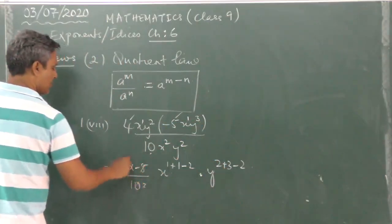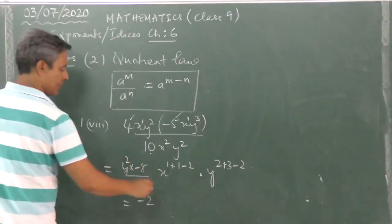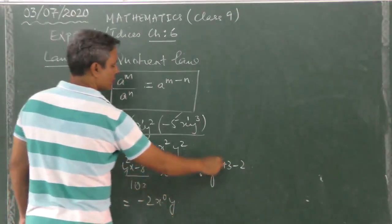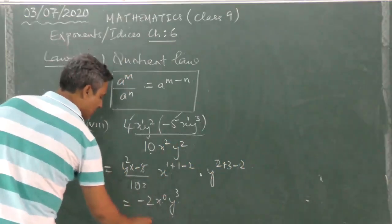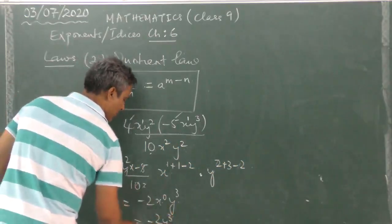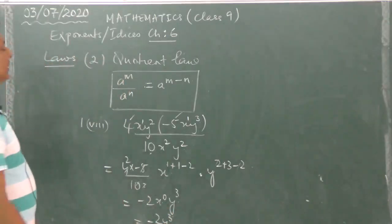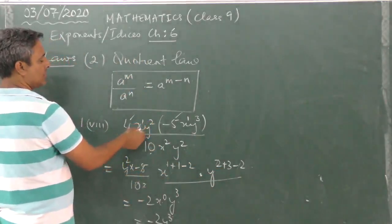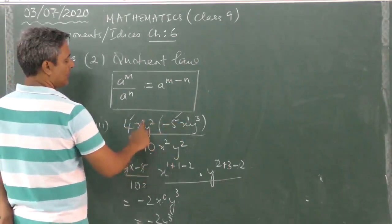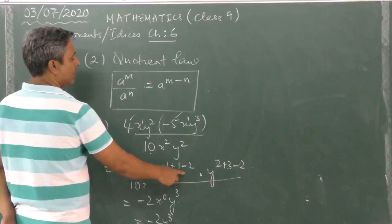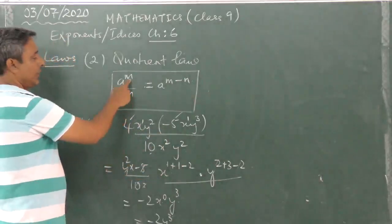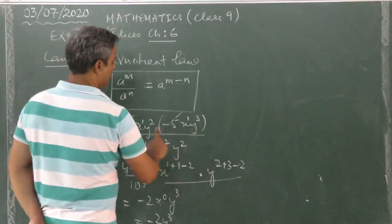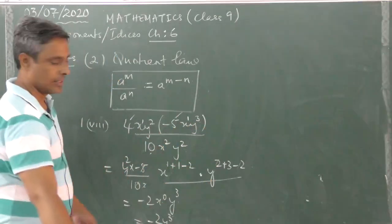Completing the calculation: 4 into minus 5 by 10 gives minus 2. For x: 1 plus 1 is 2, then 2 minus 2 gives x to the power of 0. For y: 2 plus 3 minus 2 gives y to the power of 3. The answer is minus 2y cubed. We add the powers in the numerator and subtract the power in the denominator — that is how we apply the Quotient Law.